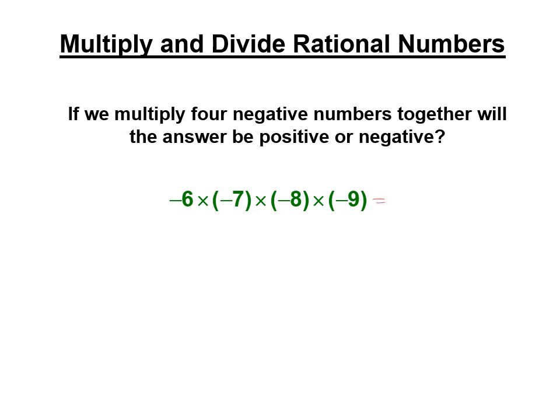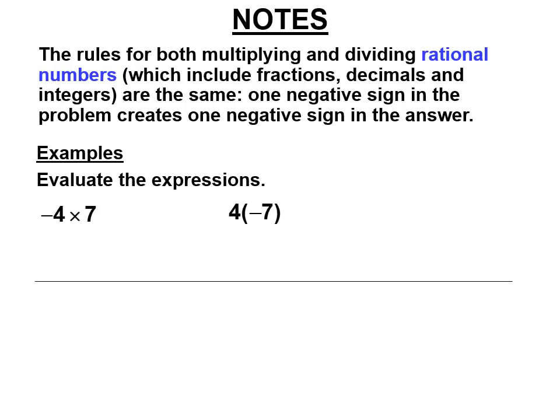With four negatives being multiplied, would the answer be positive or negative? We'll find out. The rules for multiplying and dividing rational numbers, which include fractions, decimals, and integers, are the same: one negative sign in the problem creates one negative sign in the answer.